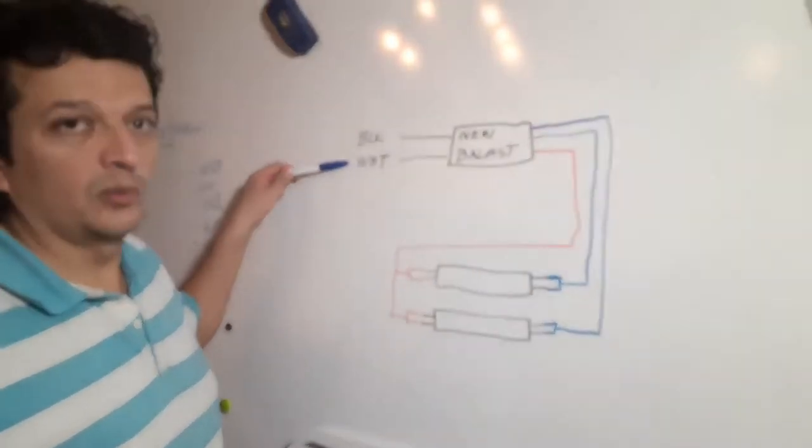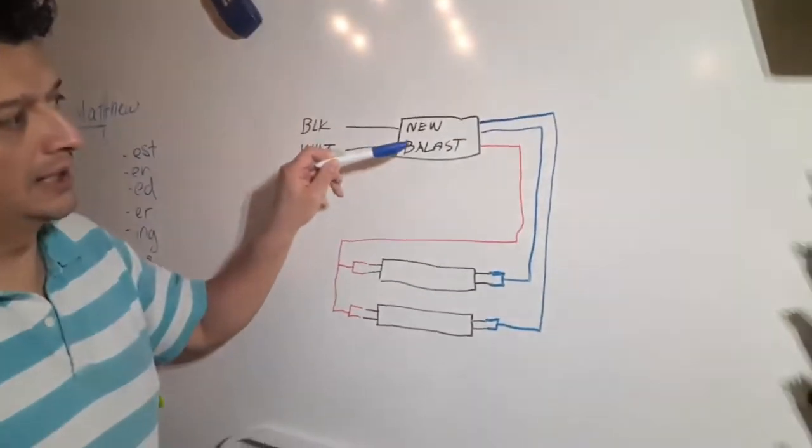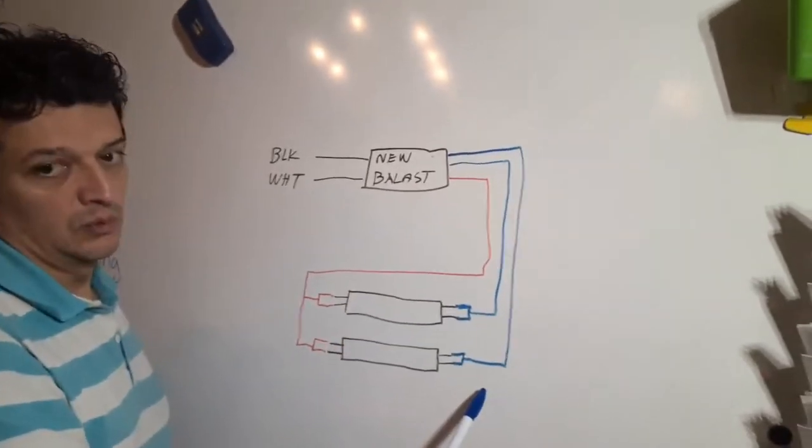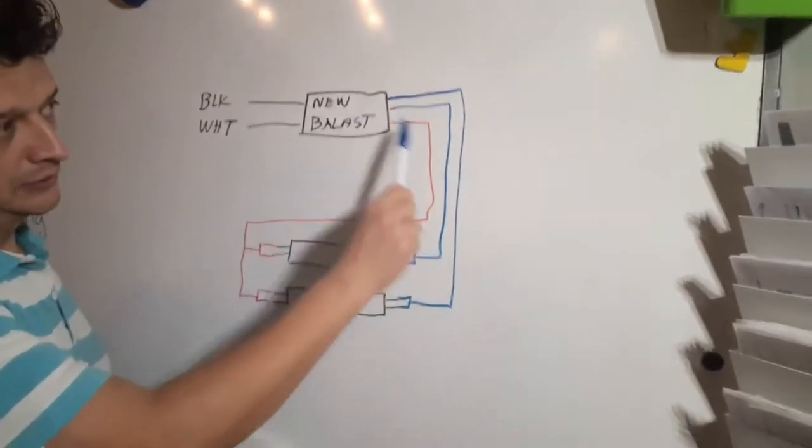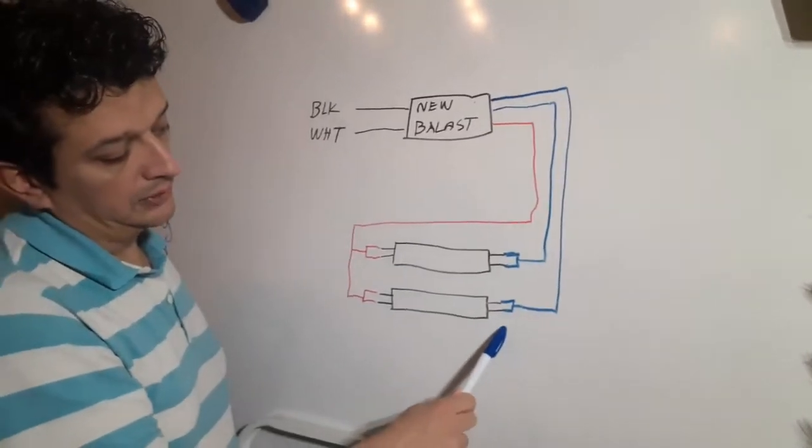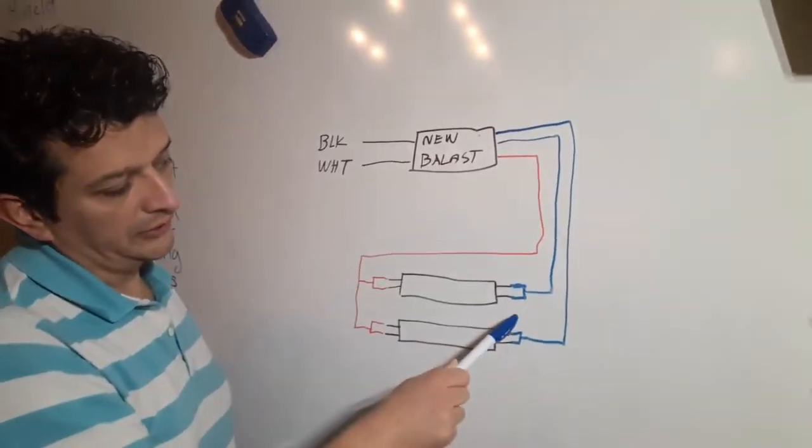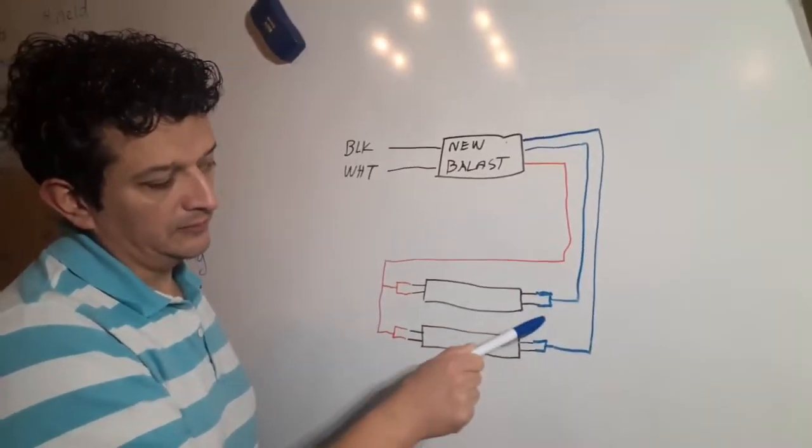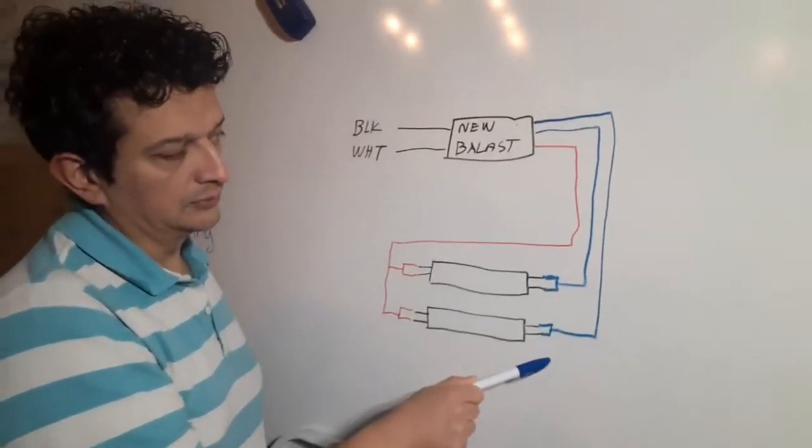So you have the black and the white wires that lead into the new ballast. And then on the other side there are two wires. There's one blue wire that's going to go to one light and another one to the other. And we're going to just split the signal here so that it goes onto the two prongs.